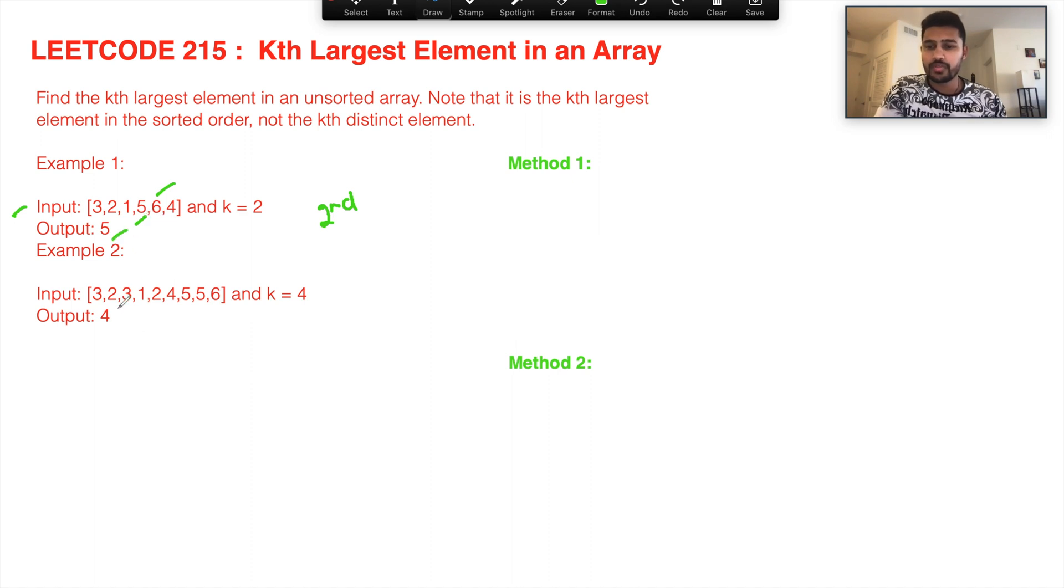Let's go to the second example. You have multiple numbers and k is equal to 4, so fourth largest in this case. The first largest is 6, second is 5, third is also 5, and then comes 4. You need to return 4.